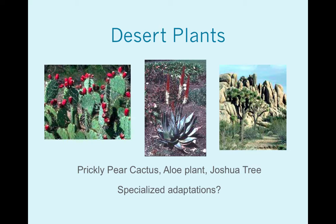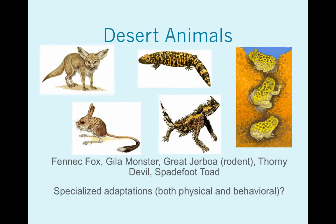Desert plants are able to absorb water very quickly during the incredibly infrequent rains that happen, so the roots are up towards the top of the soil.